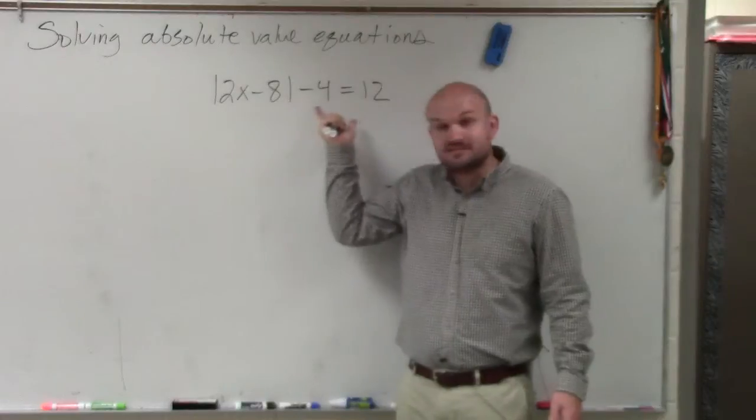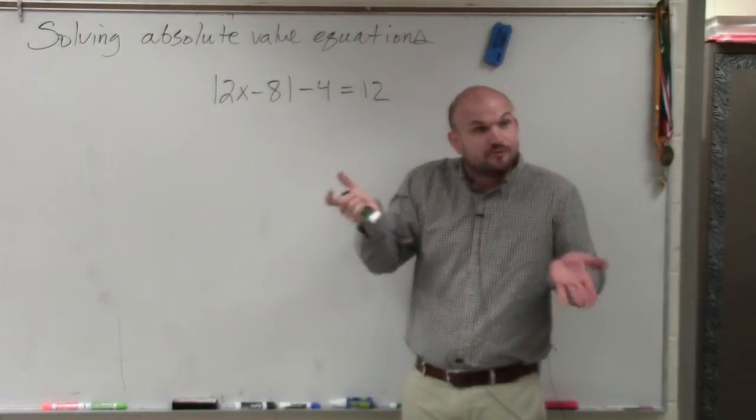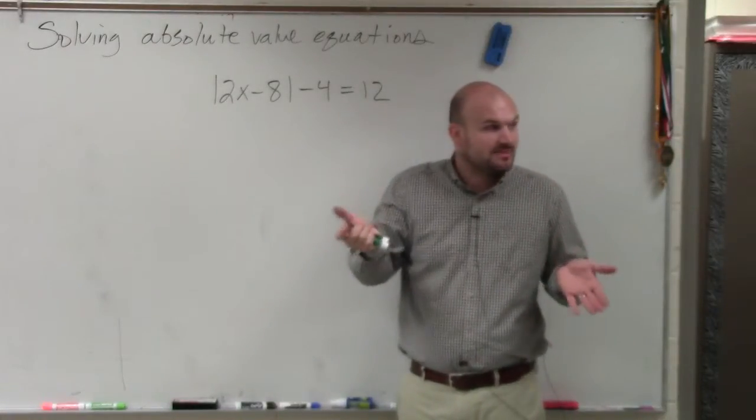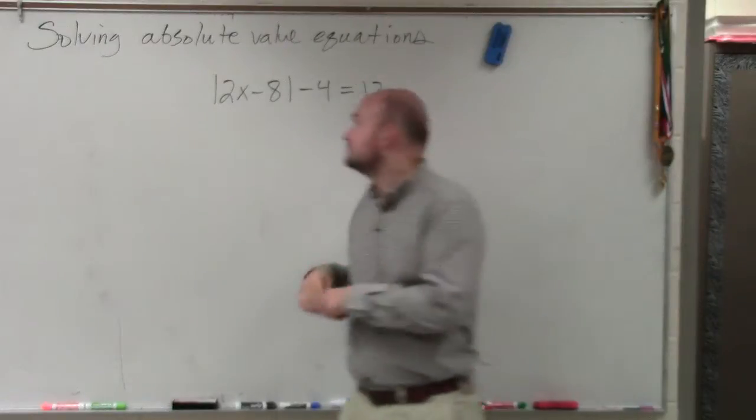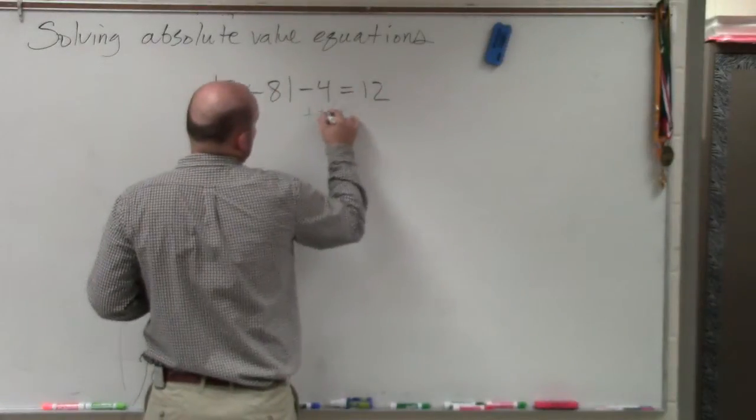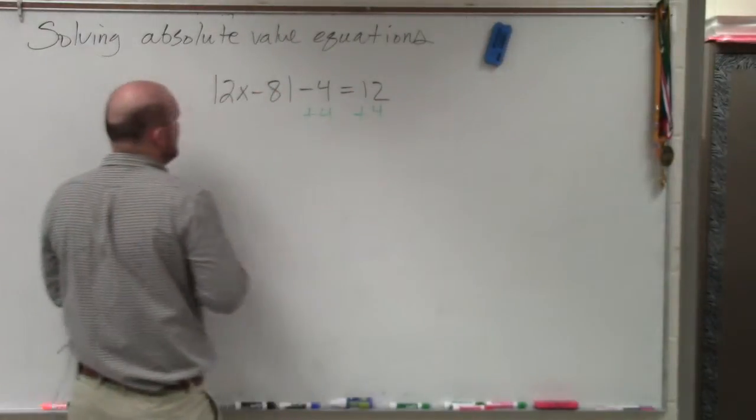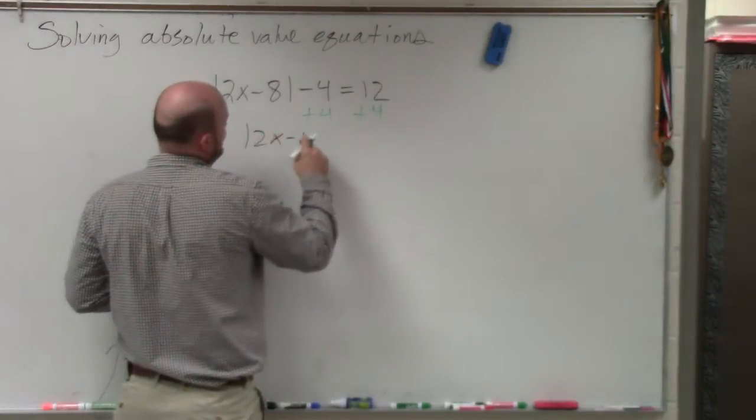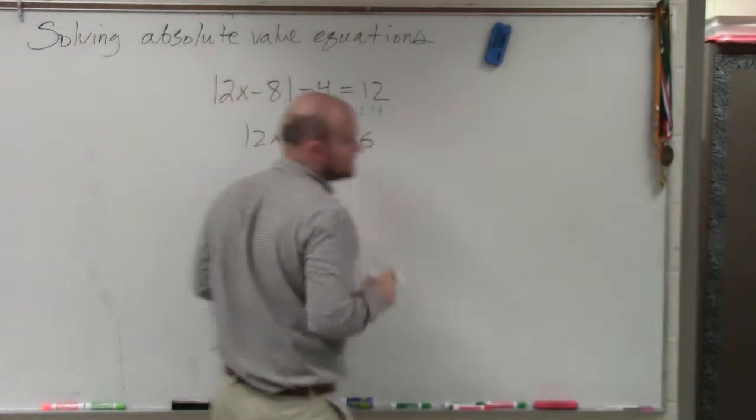Do you guys see in the absolute value it's being subtracted by 4? So I have to undo that. So how do you undo subtracting by 4? You add 4. So therefore, now I have absolute value of 2x minus 8 is equal to 16.